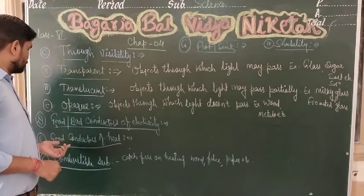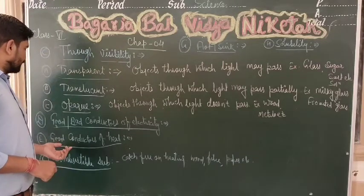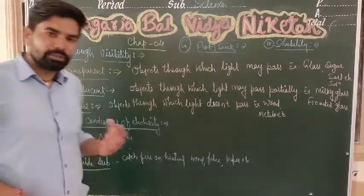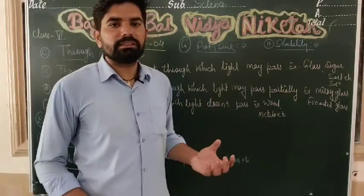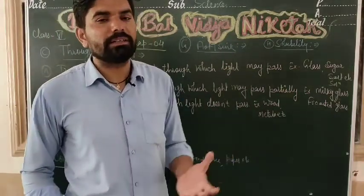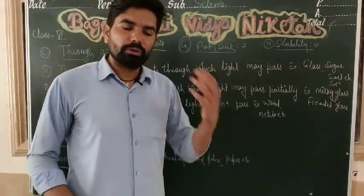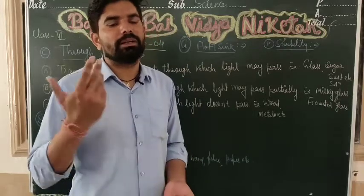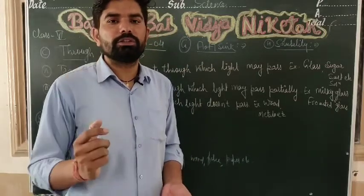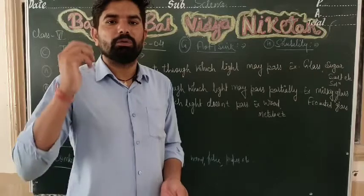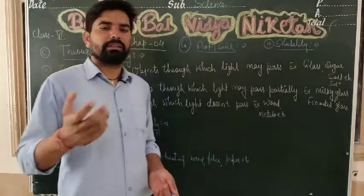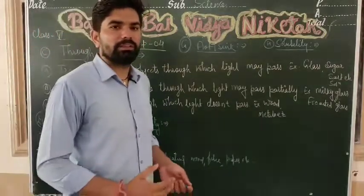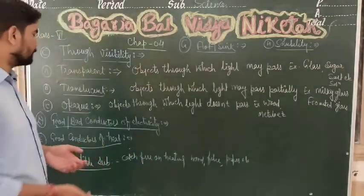The next property is good conductors of heat. Metals are good conductors of heat. Wood, rubber, and plastic do not conduct heat — they are insulators of heat.